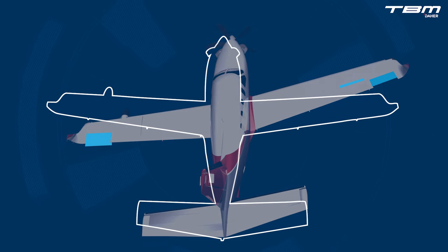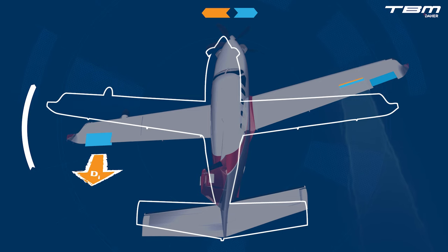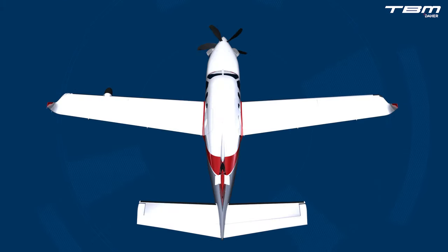Regarding adverse yaw, when increasing lift an aileron also induces drag, which pulls or drags the nose of the airplane in the opposite direction to the roll. For example, if one wanted to roll to the right to wings level, the nose would yaw to the left against the desired direction of movement. The TBM's advanced aerodynamic design incorporates spoilerons, which assist with roll control and mitigate adverse yaw. Despite this advantage, one should give the rudder priority for roll control when maneuvering in the low-speed regime.